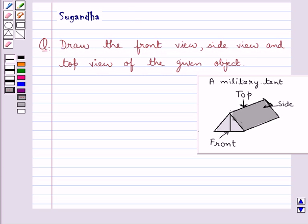We are given a military tent and we are supposed to draw the front view, side view and the top view of this military tent.